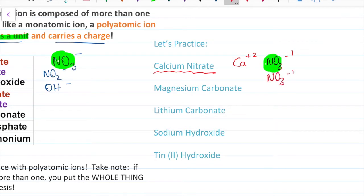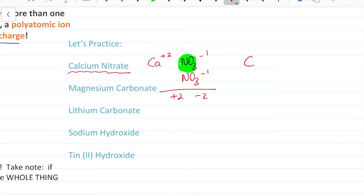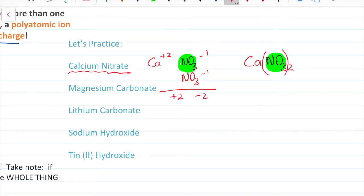Now I add another nitrate — my charge is plus two minus two, so my compound has a calcium and two nitrates. I need two of this whole thing. I can't just put a two next to it because then it looks like NO32, which is not a thing. So I take my entire nitrate and put it in parentheses. This is calcium nitrate. The rules of balancing charges still apply — treat your polyatomic ion as a whole single unit.